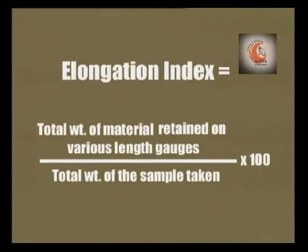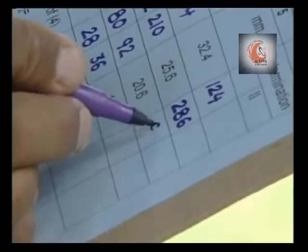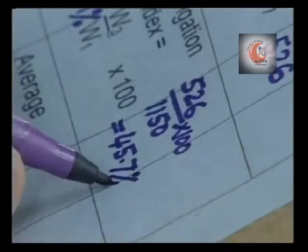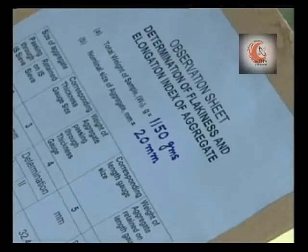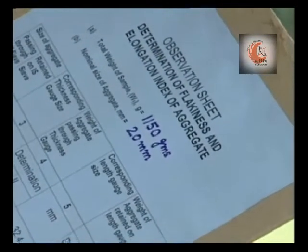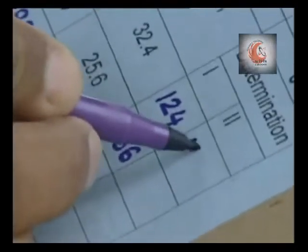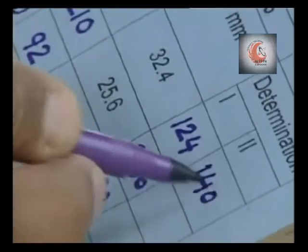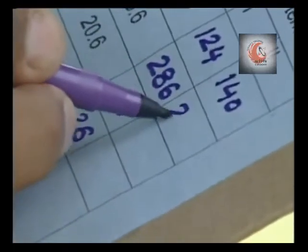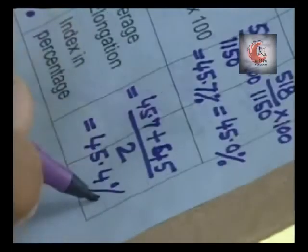The elongation index is the total weight of aggregates retained on the various length gauges expressed as a percentage of the total weight of the sample taken. In this case, the elongation index of aggregate comes out to be 45.7%. Similarly, the elongation index for a second sample from the same lot is measured, and the average of two values obtained is reported as the final result.